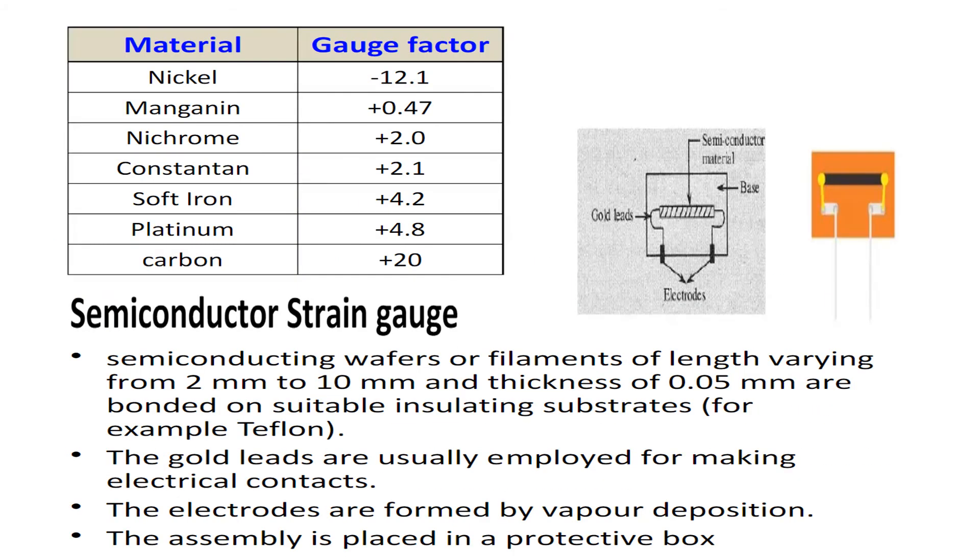Now these are the materials having their gauge factor in front of them: Nickel has -12.1, Manganin is +0.47, Nichrome +2.0, Constantan +2.1, soft iron +4.2, platinum has +4.8, and carbon has +20. This is the diagram showing the gauge.